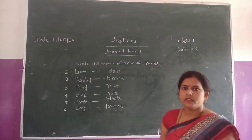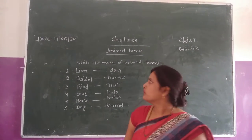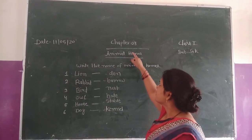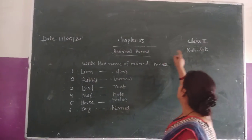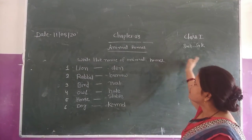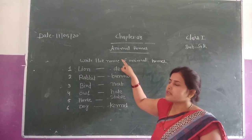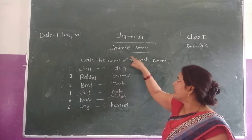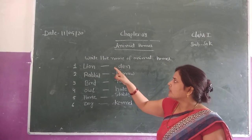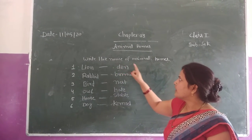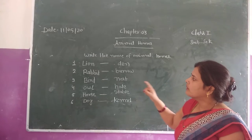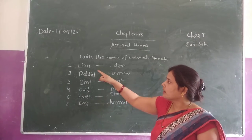Good morning, listeners. Today is complete chapter 3, class 1 of JK. Our chapter's name is animal home. In this chapter, write the name of animal home. Question number 1: